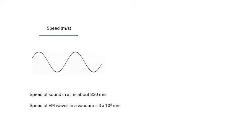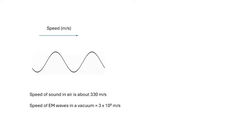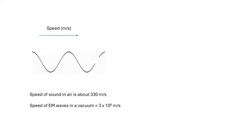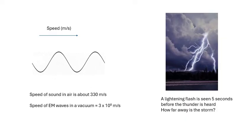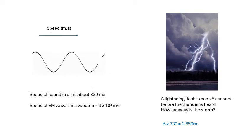The speed of electromagnetic waves in a vacuum is 3×10⁸ meters per second — that's 300 million meters per second, or 300,000 kilometers per second. That's light, radio, microwaves. It also travels at about that speed in air. Pause the video for a quick question — the answer is 1650 meters.